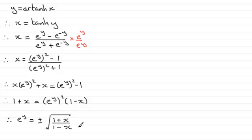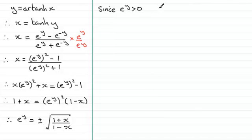Now, we've got e to the y being plus or minus this result. But e to the y is always a positive value. So since e to the y is always greater than zero, because obviously if we look at the graph of e to the y, it's going to look something like this. Always positive then.